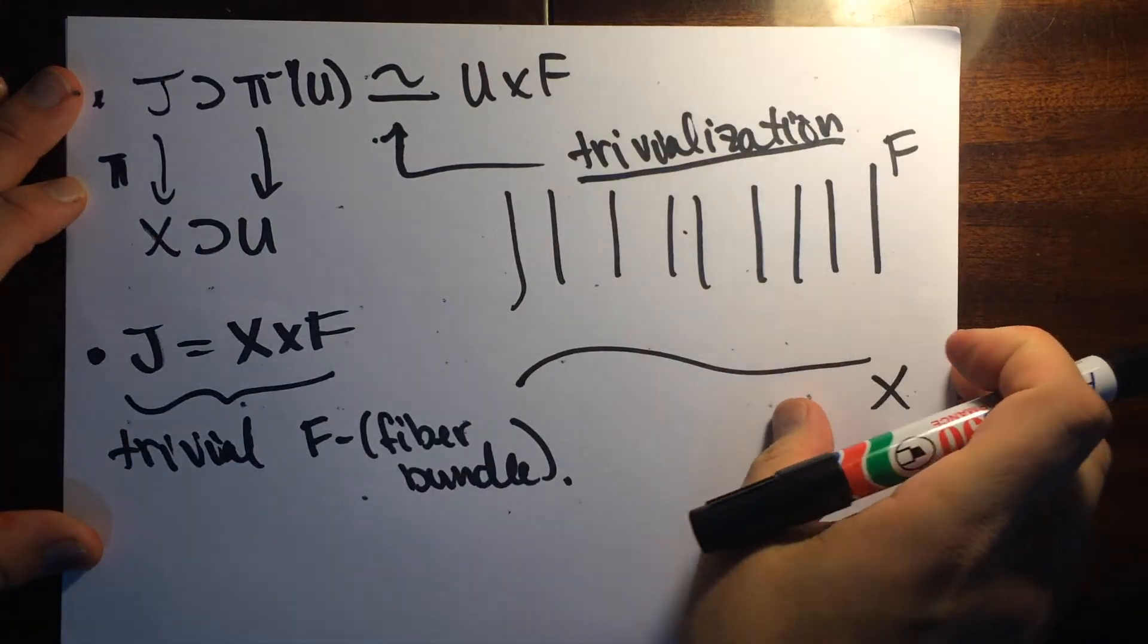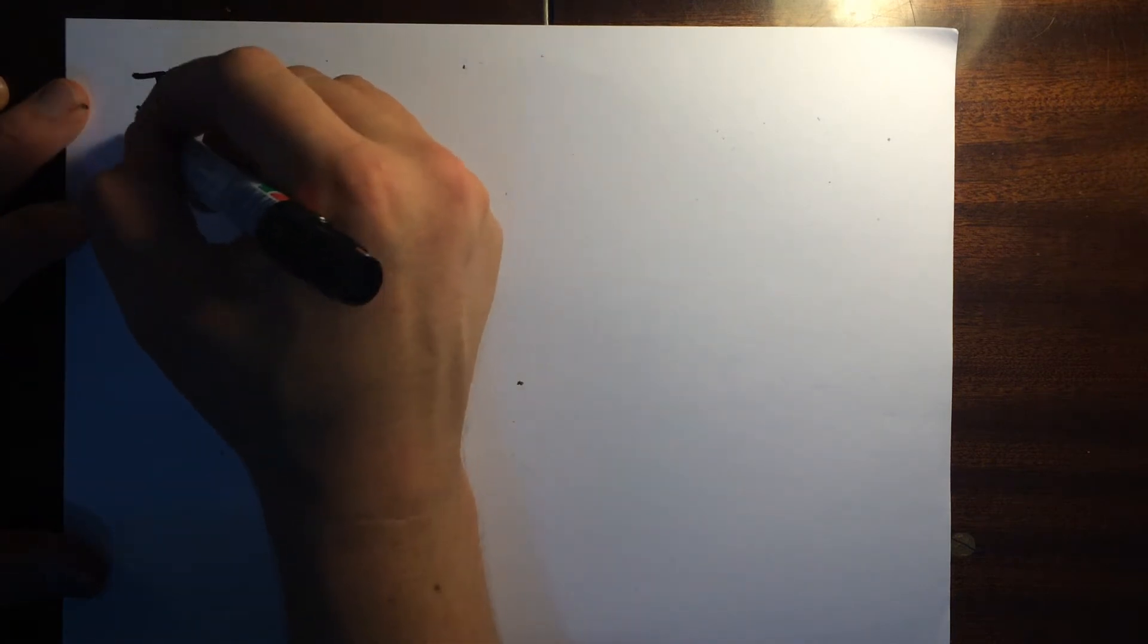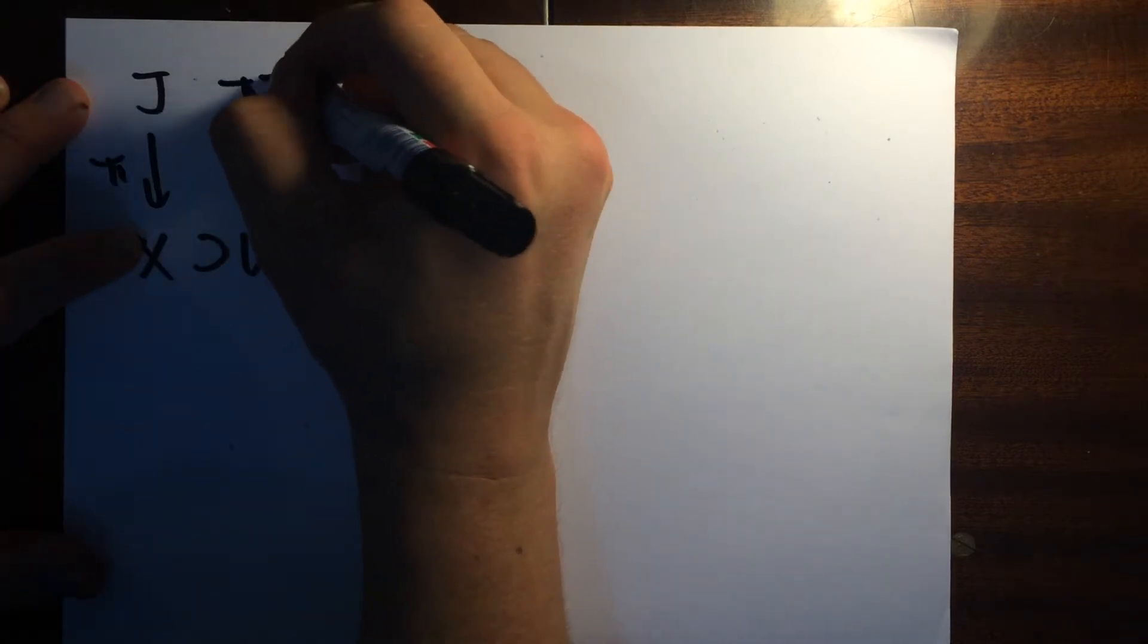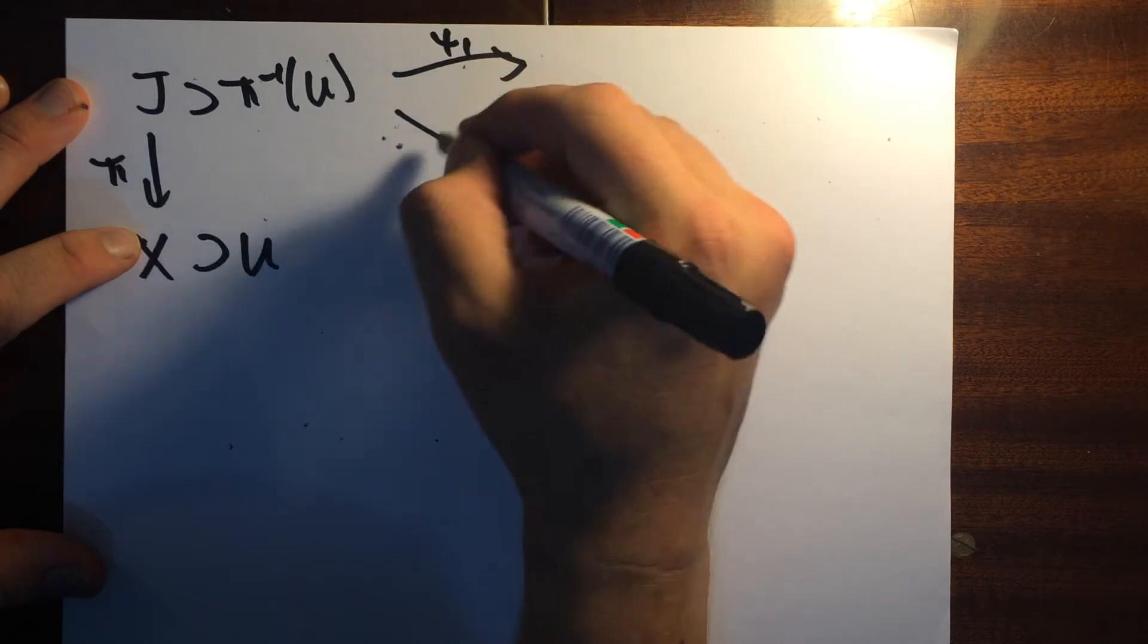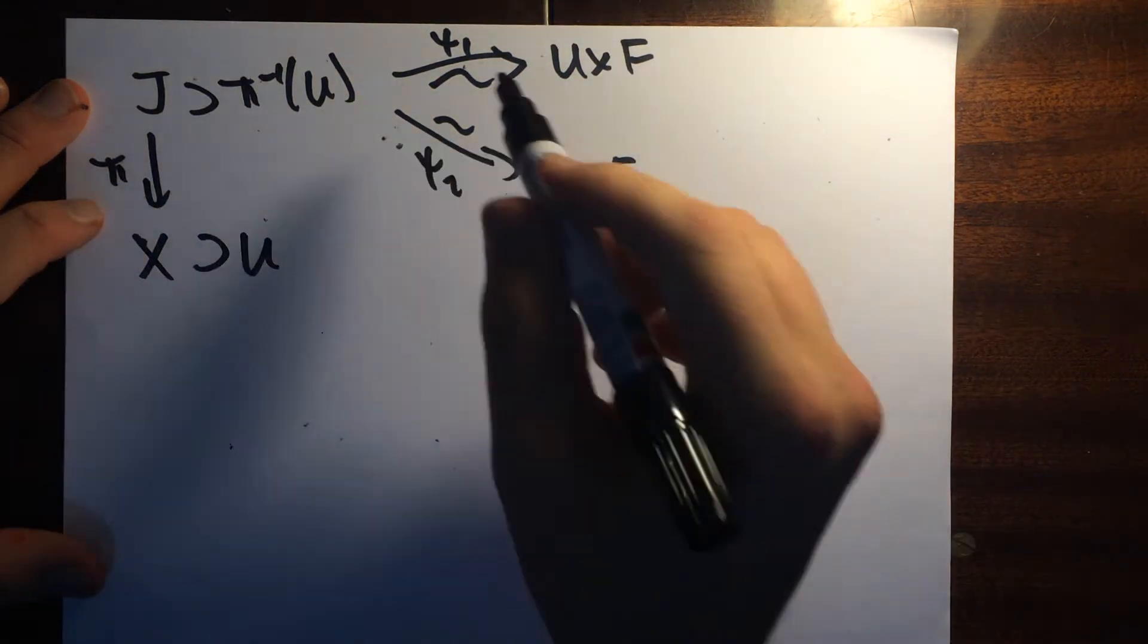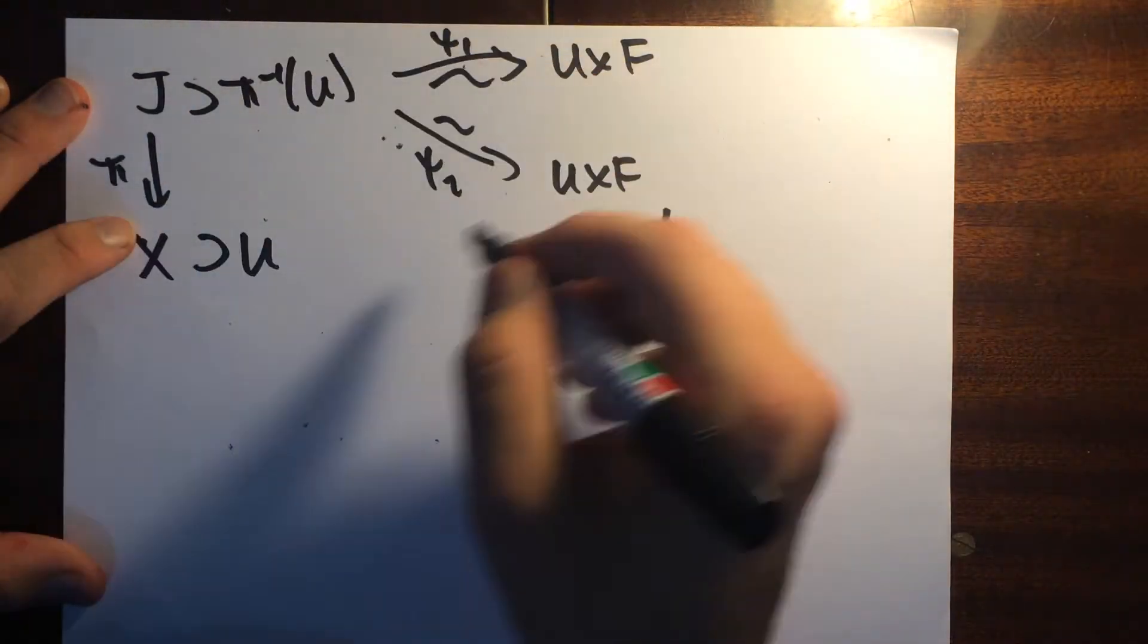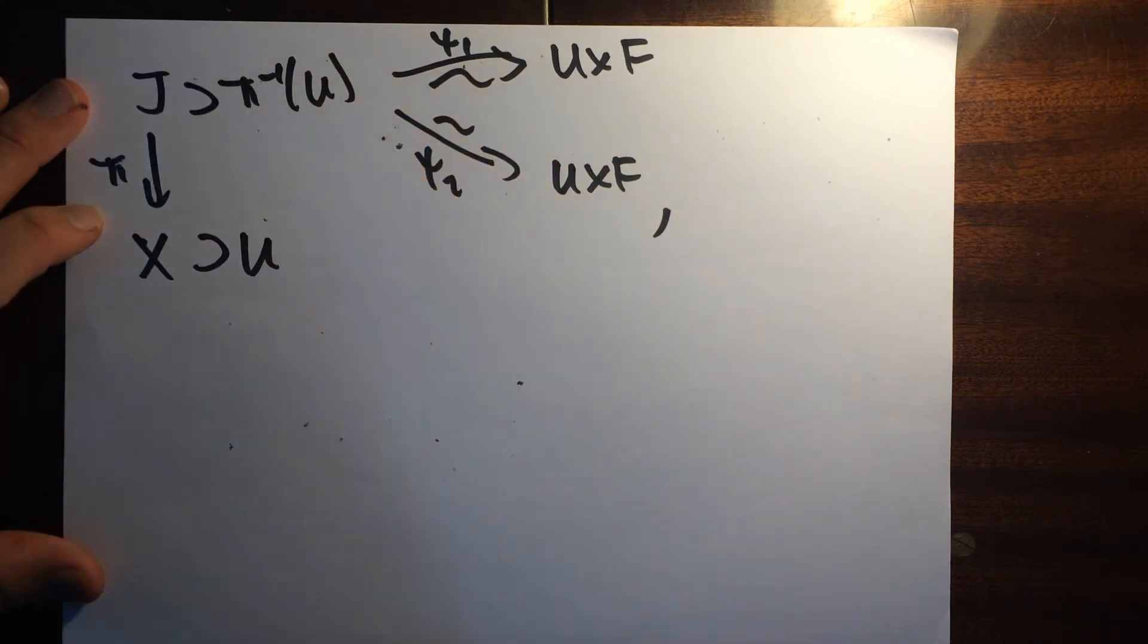Sometimes you can have an open set and multiple trivializations. So you could have J to X here and then this U, pi inverse of U. And maybe there's two guys here, maybe some Psi 1 and Psi 2. These are both isomorphisms to U cross F. I should say that this isomorphism has to respect the projection. Once you project down, it's the same thing as going backwards and projecting this way.